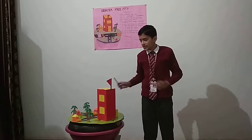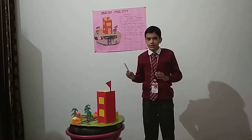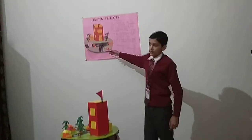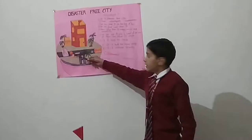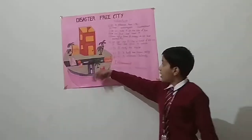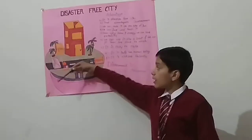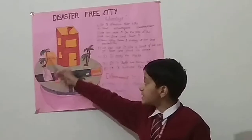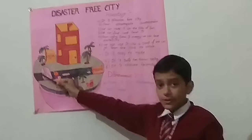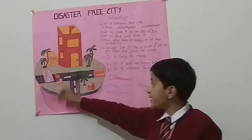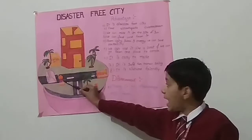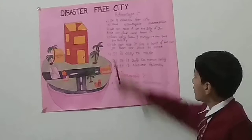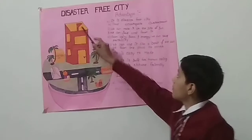This is my model of disaster-free city. This is the chart of this model. The model includes: Building, Control Room, Trees, Disaster-Free City icon, House, Road, and Flag.